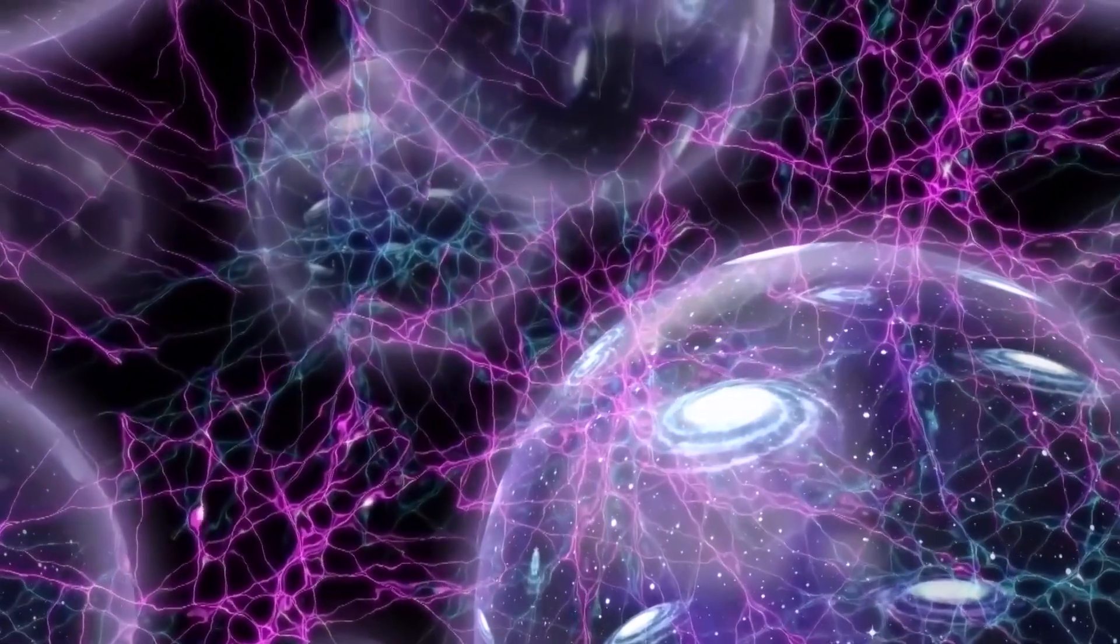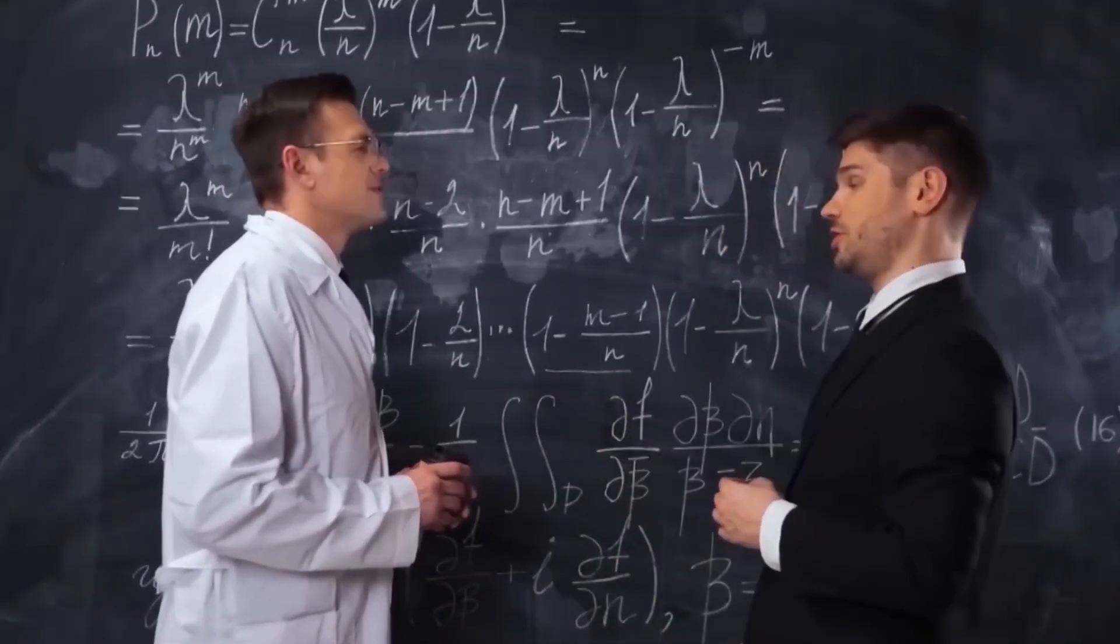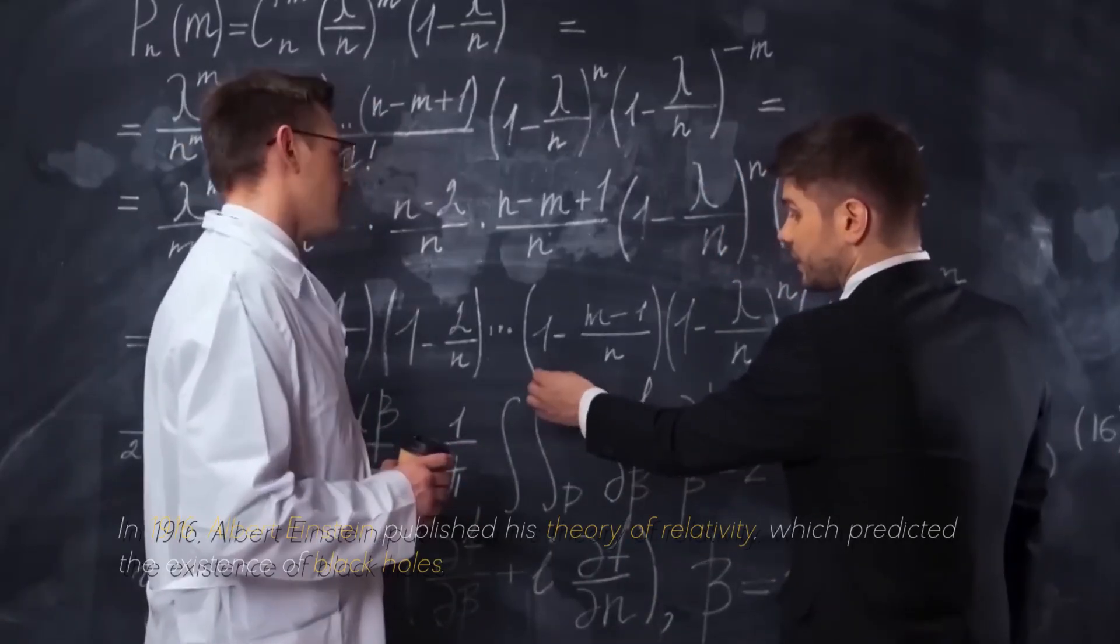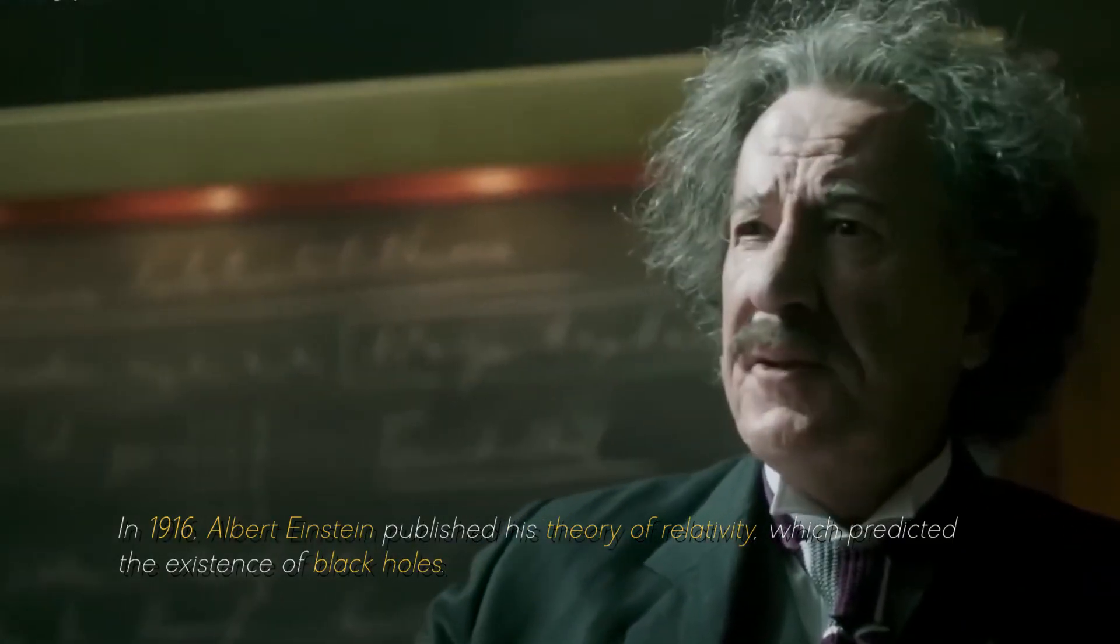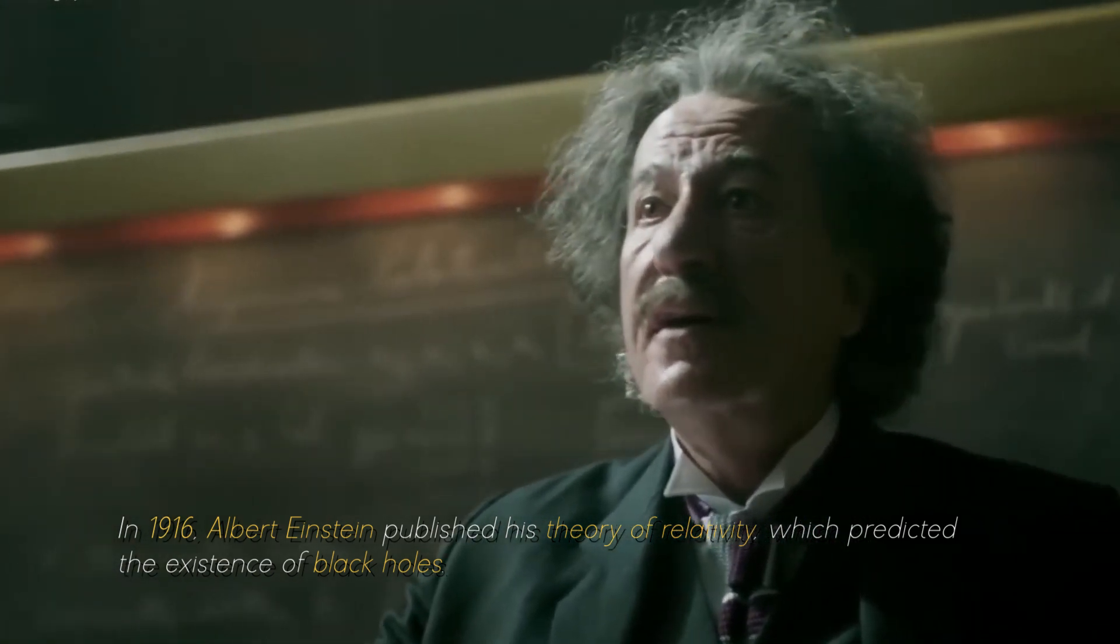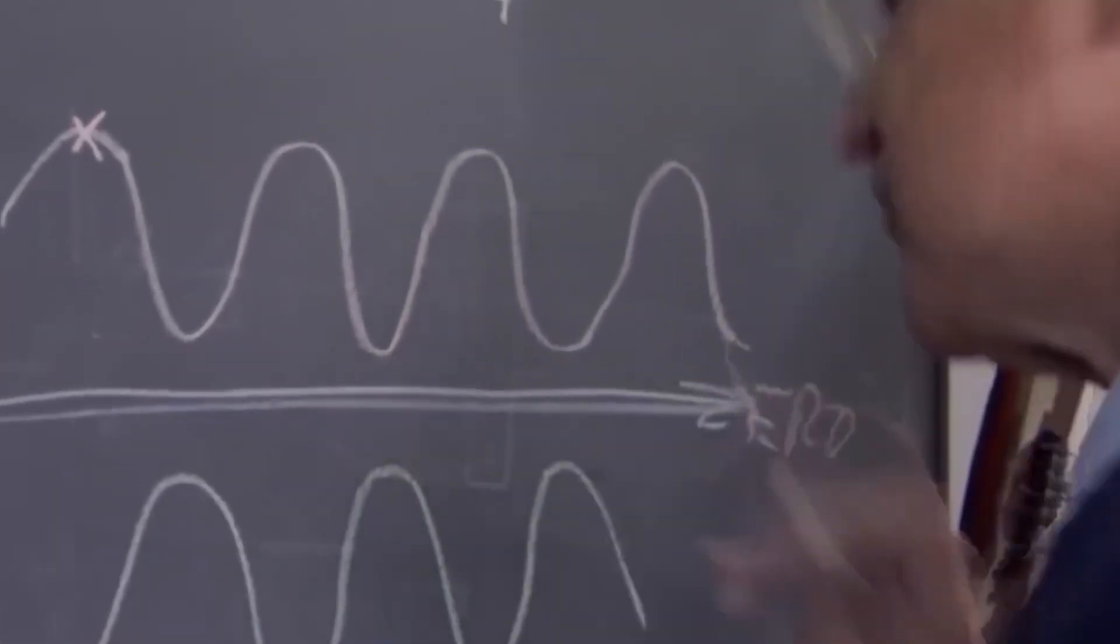Although many of us have a general idea of what black holes are, there are still some gaps in our knowledge. In 1916, Albert Einstein published his theory of relativity, which predicted the existence of black holes. At that time, the concept of black holes was purely theoretical.